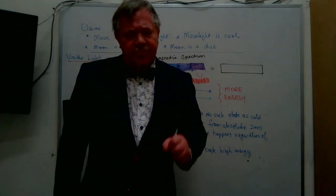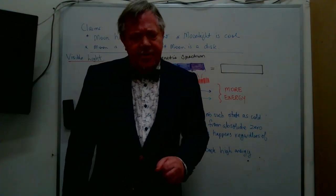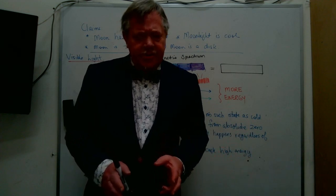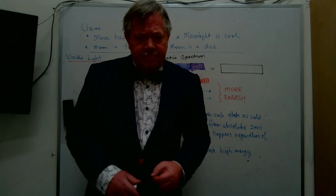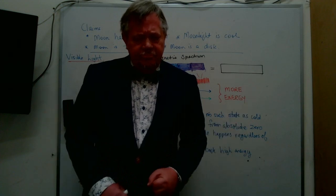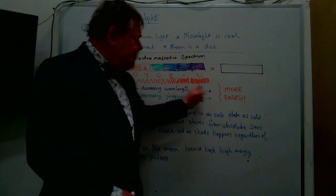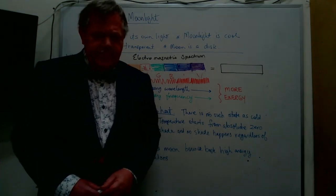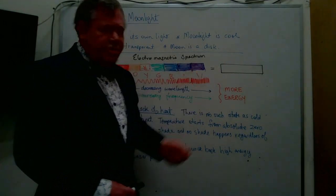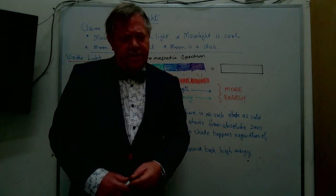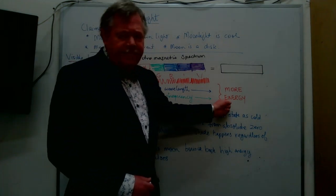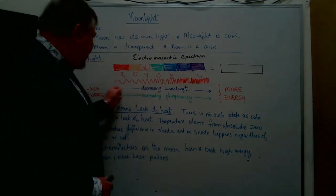By now you'll have worked out that there is only one type of photon — the wavelengths exist on the electromagnetic spectrum. If the moon had cool light, where would it fit on this spectrum? This is the entire visible light portion of the electromagnetic spectrum, with more energy at the violet end and less energy at the red end. There is no place for a special 'cool' photon.